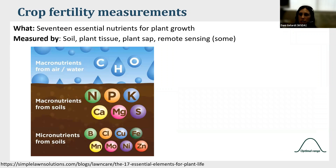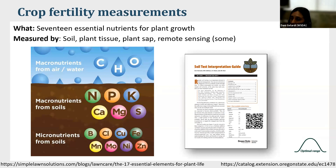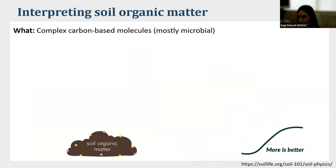Crop fertility measurements are one of the most important things to drive soil function like crop growth and crop quality. There are 17 essential plant nutrients — 18 if you count silica. Your macronutrients need to be in much larger quantity than your micronutrients. Different crops have very different nutrient needs, so it is important to aim for the optimal range for your specific cropping system.